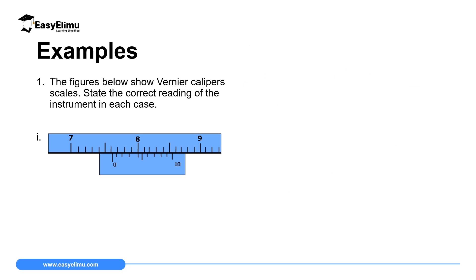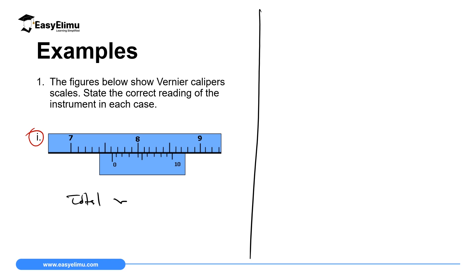Now we are going to handle two, three, or four questions to understand better. The first question shows Vernier caliper scales and asks for the correct reading in each case. To get the total reading, we add the main scale reading to the Vernier scale reading. We begin with the main scale: we go to the zero mark of the Vernier scale.